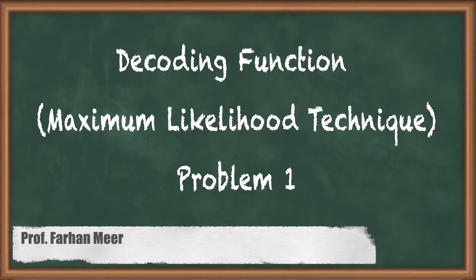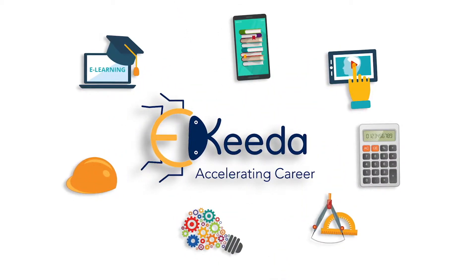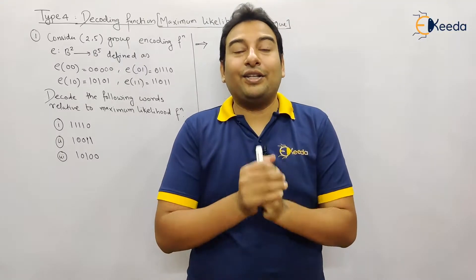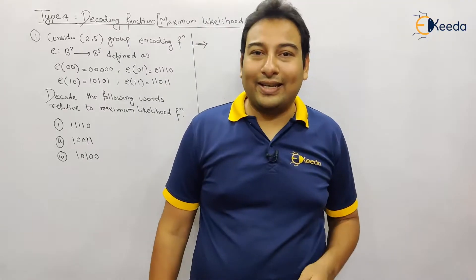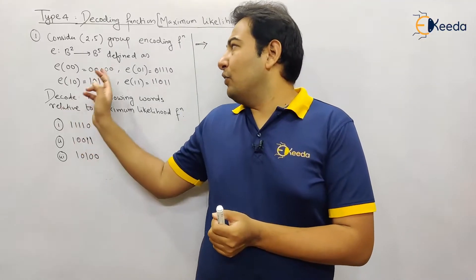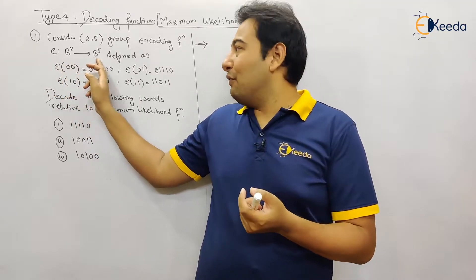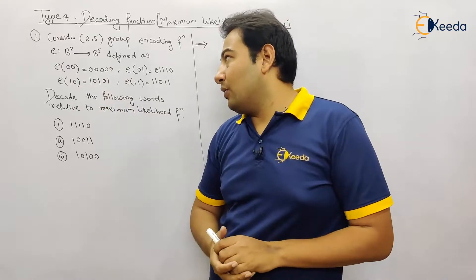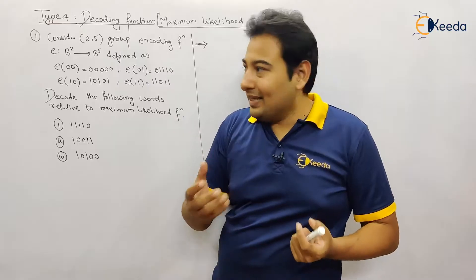Hello friends. In this video we'll be discussing decoding function problem number one, based on maximum likelihood technique. Let us discuss problem number one on decoding function using the maximum likelihood technique. What we did till now: we found out the encoding function — E00, E01, E10, and E11. Now we are going to do the reverse thing.